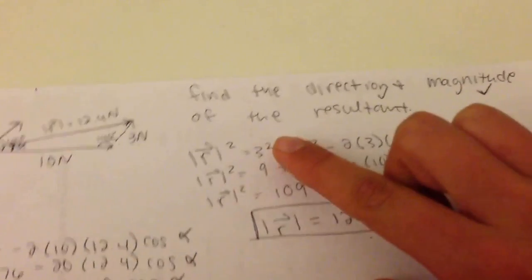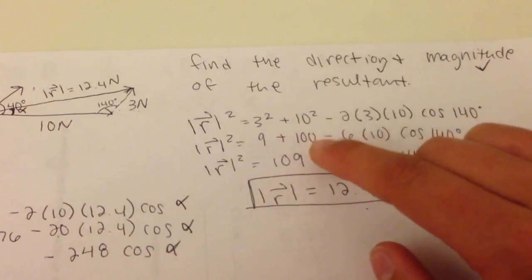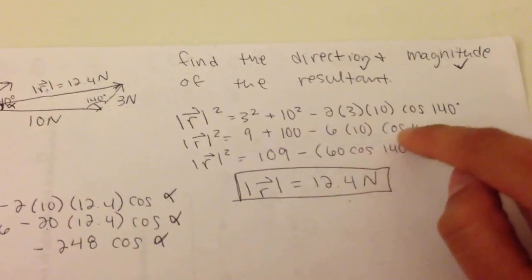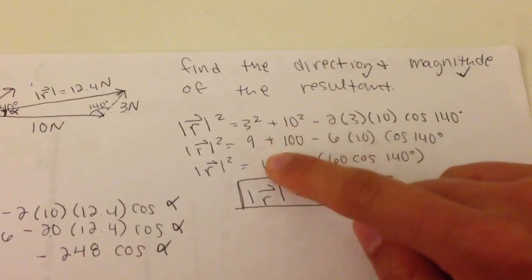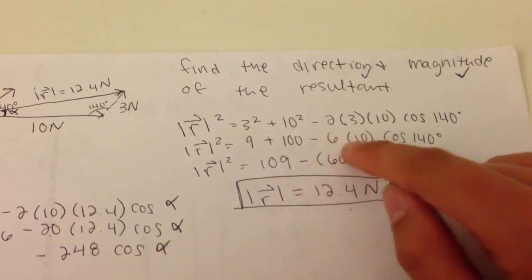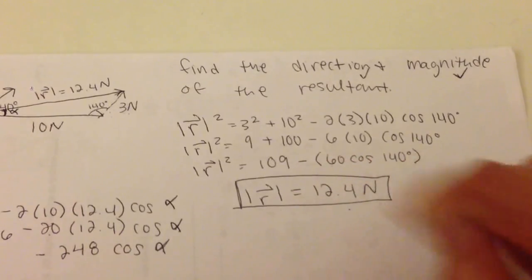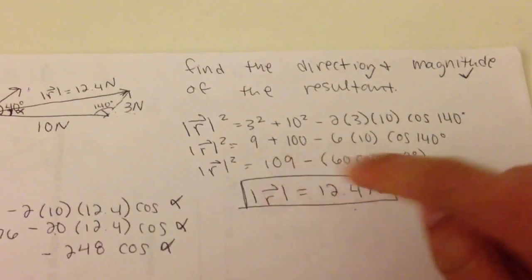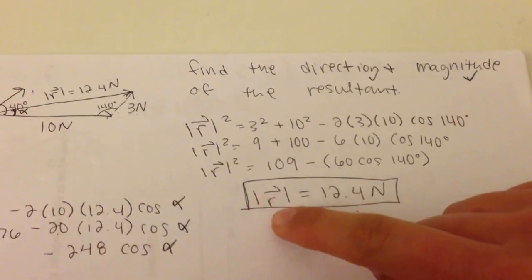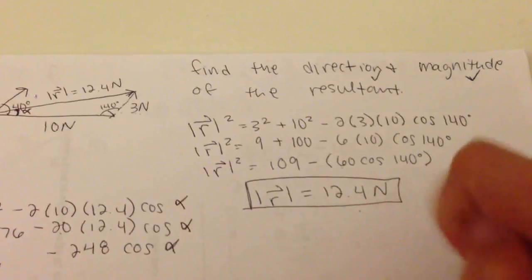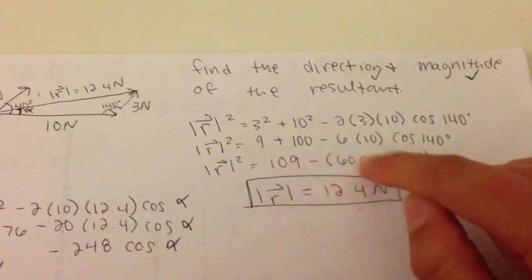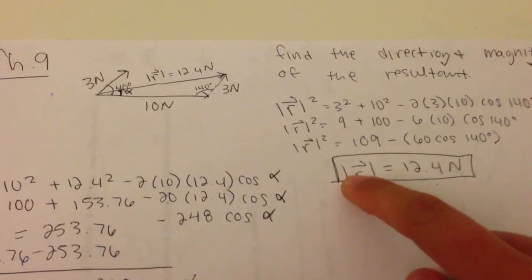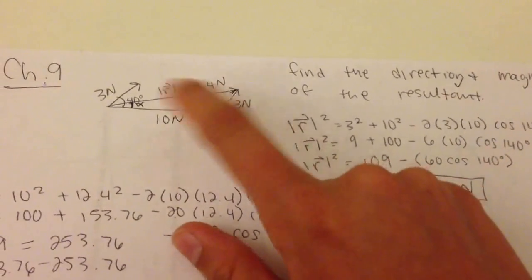So we just do simple math. 3 squared is 9, 10 squared is 100. Cosine 140, simplify a little bit more, 109 minus 60 times cosine of 140. And I put parentheses around my 60 times cosine of 140 because those are connected. When you finally solve, you get the resultant is equal to 12.4 newtons. So in my head I've square rooted and simplified this whole thing. So that's how you solve for your magnitude of your resultant and you always put newtons because this is what was given to you.